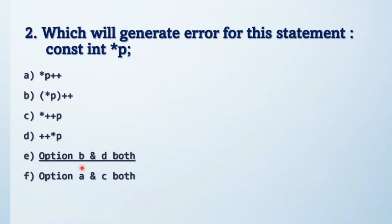The answer is option b and d both. These both generate error in code. If you've written const integer star p, as I told in the previous question, star p is constant so we can't change the value of star p. First line star p plus plus means here only p increment, so address increment, so this is not a matter.